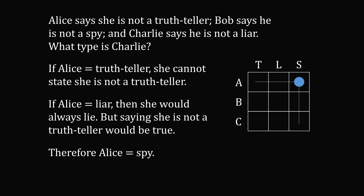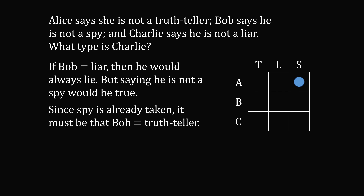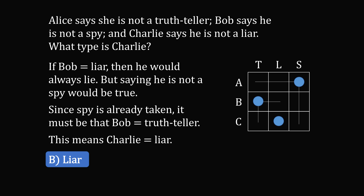So Bob and Charlie only have two possibilities. If Bob were a liar, he would always lie, but saying he is not a spy would then be a true statement. But we know Bob cannot be a spy — that's already taken. So it must be that Bob is a truth teller. We eliminate the row and column, and that means Charlie has to be a liar. The correct answer is B: Charlie is a liar.